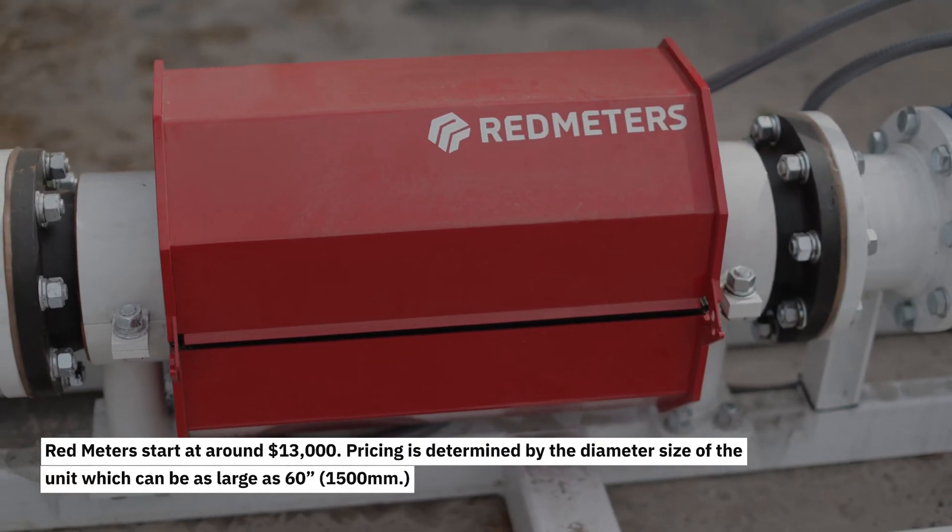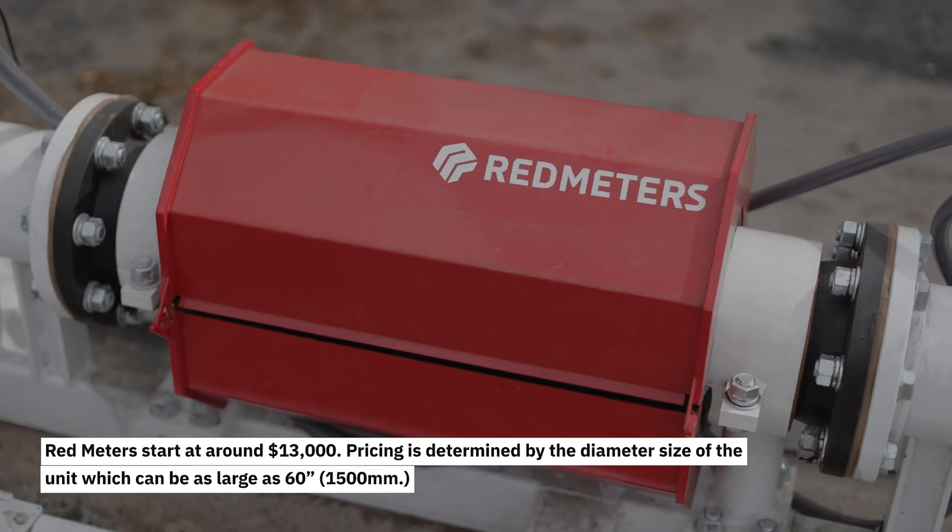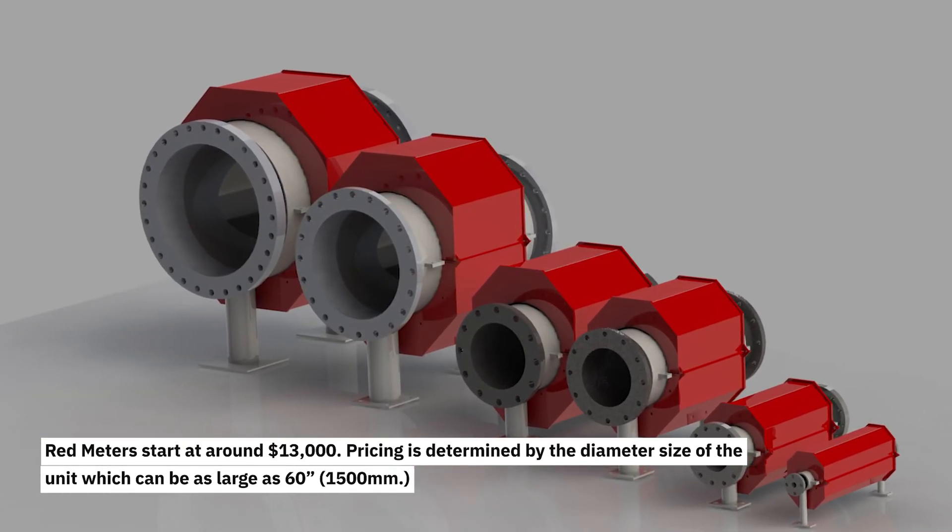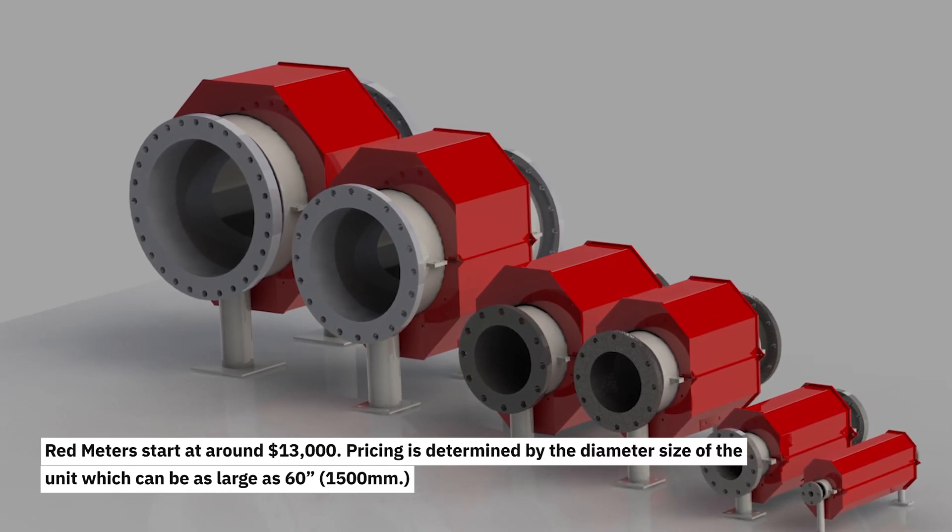Red Meter start at around $13,000. Pricing is determined by the diameter of the unit, which can be as large as 60 inches or 1,500 millimeters.